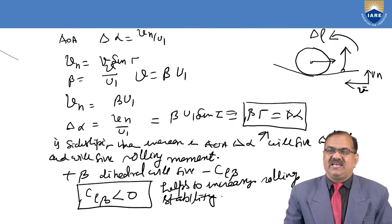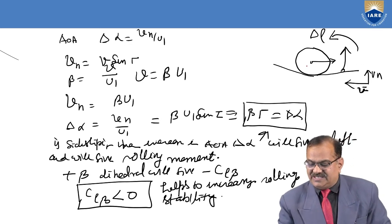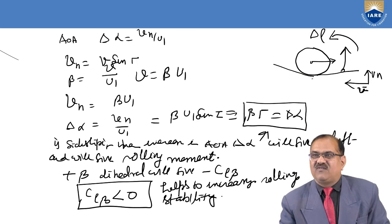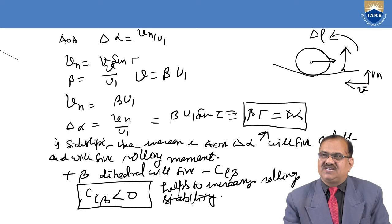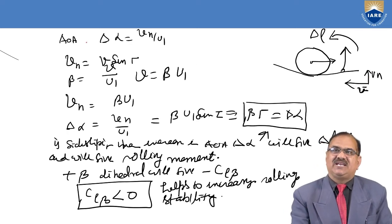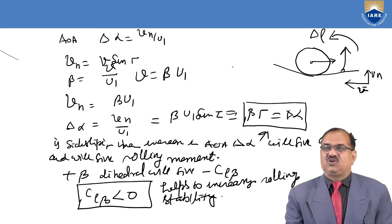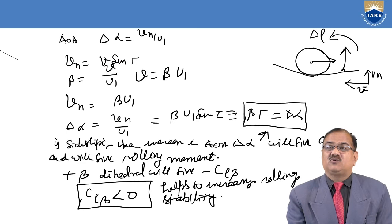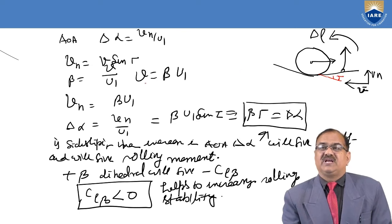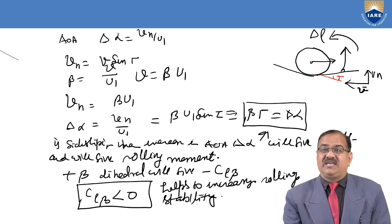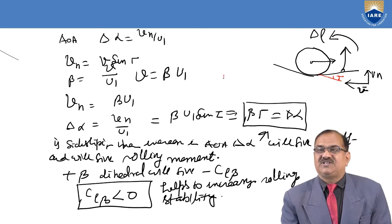Here some derivations are given. This is the diagram — the aircraft fuselage and here is the wing. If you are rolling and the aircraft is moving in this direction, there is a vertical component of the velocity VN and a horizontal component of the velocity. The angle of attack delta alpha is equal to VN divided by U. VN is equal to V into sin gamma, where gamma is the dihedral angle. So VN is equal to B times U1 times sin gamma. For small gamma, this simplifies to B times gamma, therefore delta alpha is equal to B times gamma.